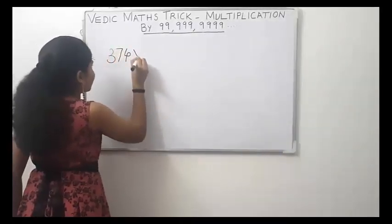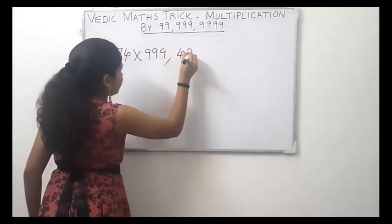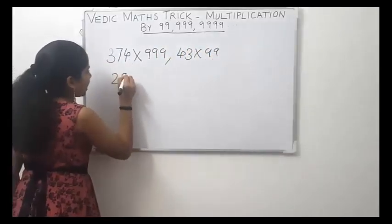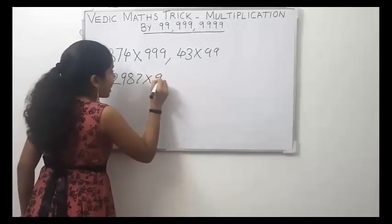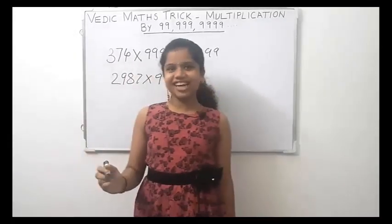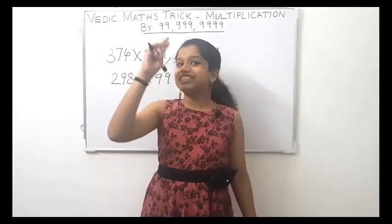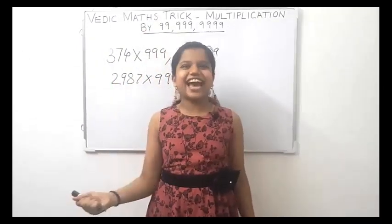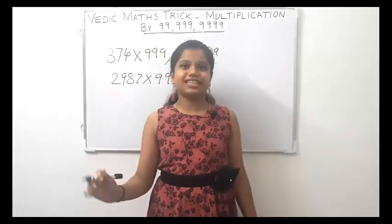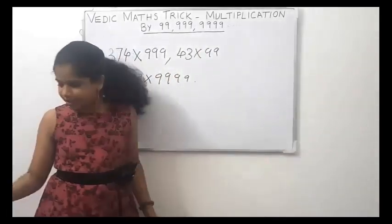For example: 374 × 999, 43 × 99, 2987 × 9999, etc. If you learn this trick, I am sure you will be able to do this in 2 seconds — yes, you can believe me — without a calculator, you will be able to do this in your mind. Let us start with 374 × 999.